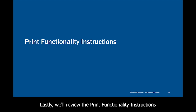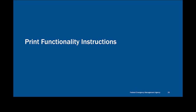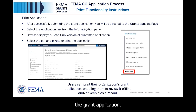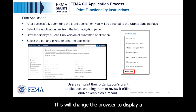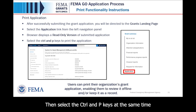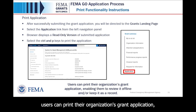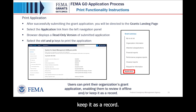Lastly, we'll review the print functionality instructions to print a copy of your completed application. After you have successfully submitted the grant application, you will be directed to the Grants Landing page. On this page, select the Application link from the left navigation panel. This will change the browser to display a read-only version of the submitted application. Then select the Ctrl and P keys at the same time on your keyboard to print the application. Users can print their organization's grant application, enabling them to review it offline or keep it as a record.